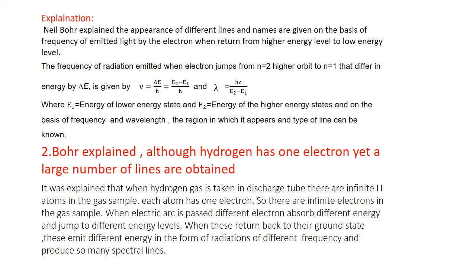Now, how can we obtain the frequency of the radiation? When an electron jumps from a higher orbit (n = higher) to a lower orbit (n = lower), the energy difference gives the frequency of the radiation. The formula is: frequency = ΔE / h, and wavelength λ = hc / ΔE, where ΔE = E_final minus E_initial.